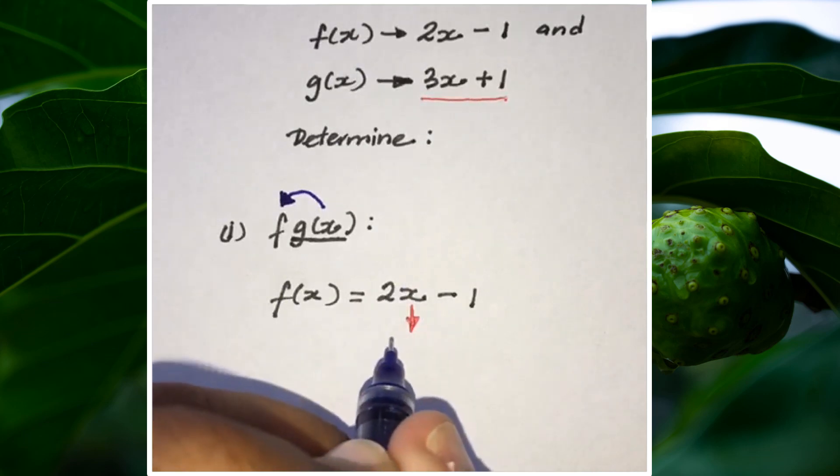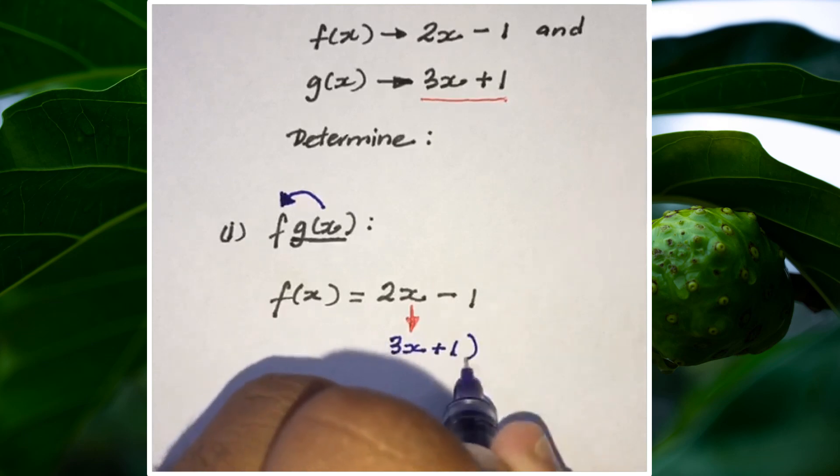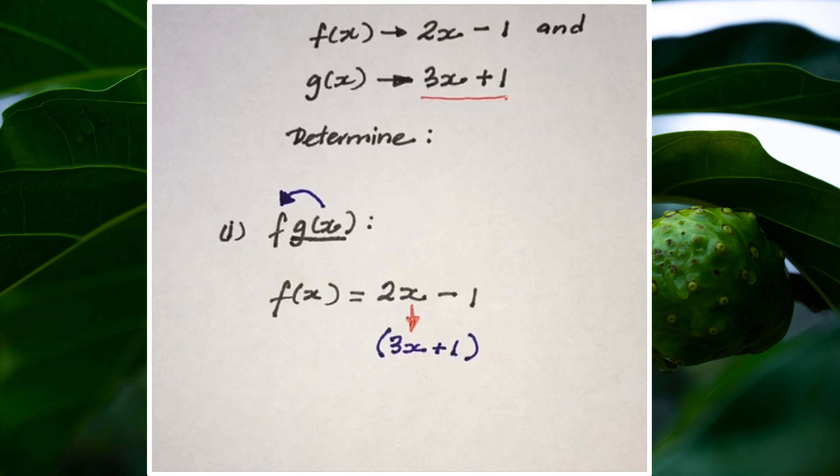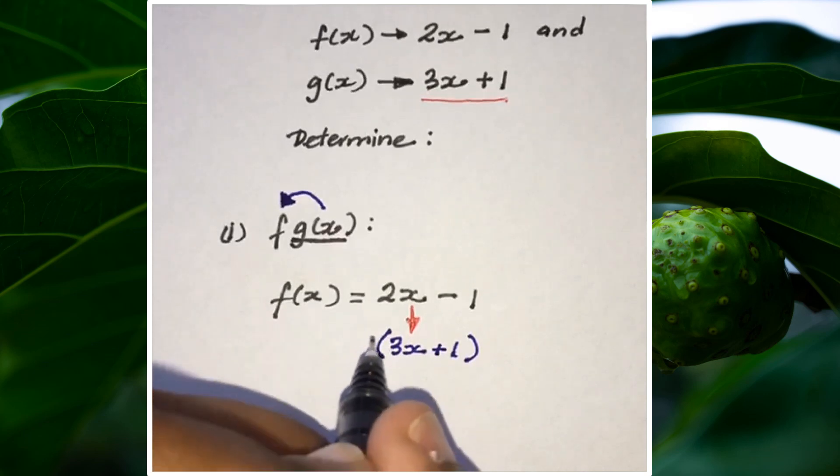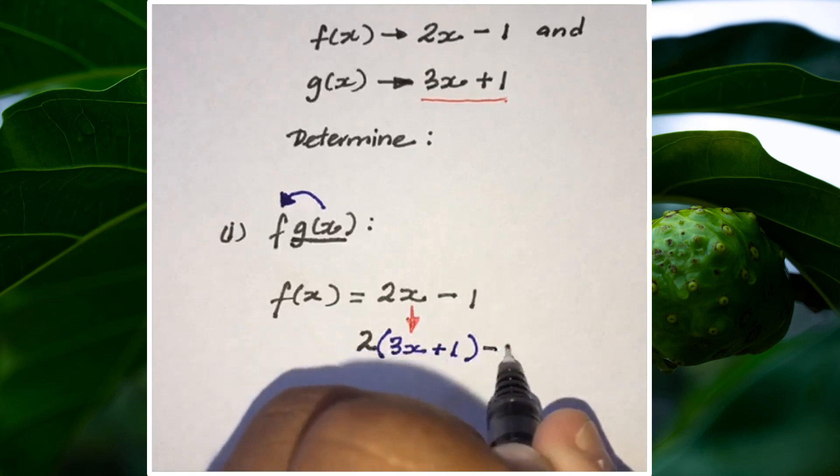So here I'm going to put g(x), which is 3x + 1, and when I'm substituting I'm going to be using my brackets. Then I'm going to put whatever I didn't touch, like that 2. I didn't touch the 2, so I'm going to put it back, and I have this minus 1 on the outside.